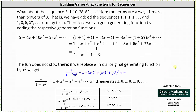What about the sequence 2, 4, 10, 28, 82, dot dot dot? Here the terms are one more than the powers of 3. That is, we have added the sequence of 1s and the sequence 1, 3, 9, 27 term by term. Therefore, we can get the generating function for the new sequence by adding the respective generating functions: 1 divided by 1 minus x plus 1 divided by 1 minus 3x. The sum of these two generating functions is the generating function for 2, 4, 10, 28, 82, and so on.